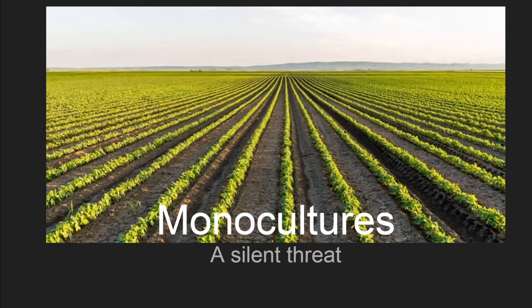Here we go with our second day of Human Impacts. Today what we're really going to talk about is this concept, this idea of a monoculture. If you take a look at this picture, you are seeing a monoculture. We have taken this land, we have removed everything else from it, and now we are using it to grow only a single species. This is all the same thing that's growing in this area. That is what a monoculture is.